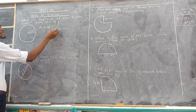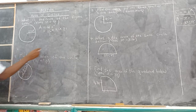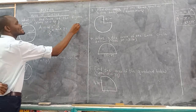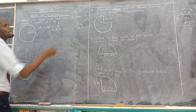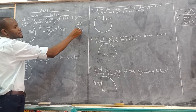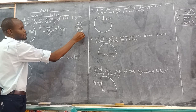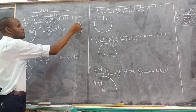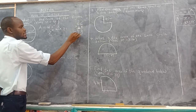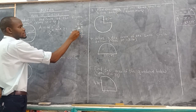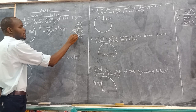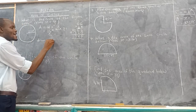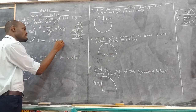Pi r squared — r squared means it must appear 2 times, that is 21 times 21. Dividing 21 by 7 gives 3, and 22 times 3 gives 66. Then 66 times 21: working through the multiplication gives us 1386. So our area is equal to 1386 meters squared.